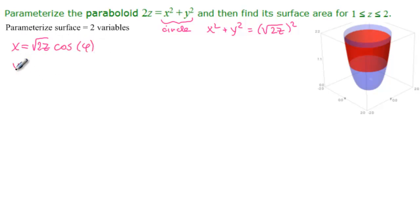And then y would equal the square root of 2z sine of phi. That gives us the paraboloid. And then we'll let z just be z, because we have a nice interval for that.